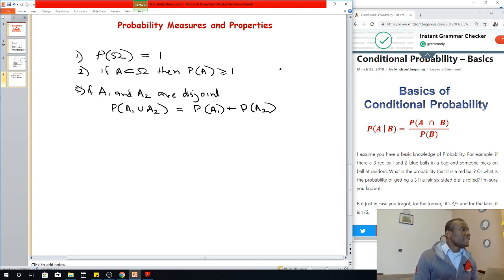These are the three measures of probability. Let's continue. We have another one that says probability of A complement is equal to 1 minus the probability of A. This also makes sense because A plus A complement makes up the universal set.